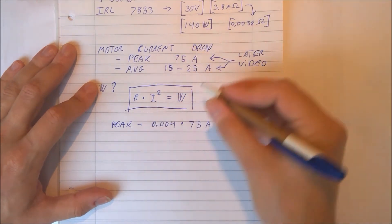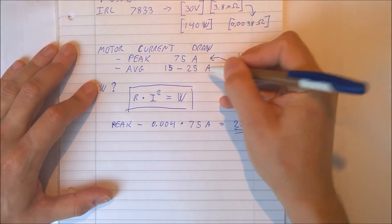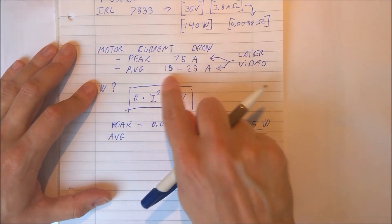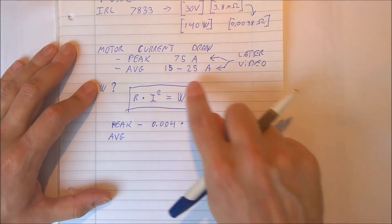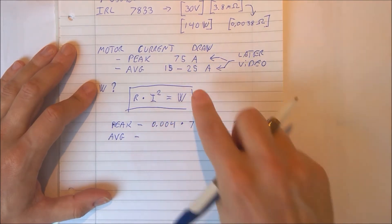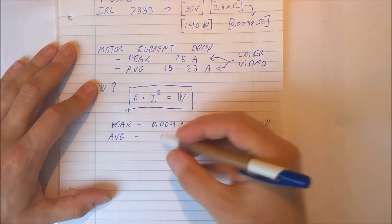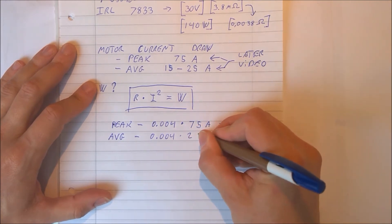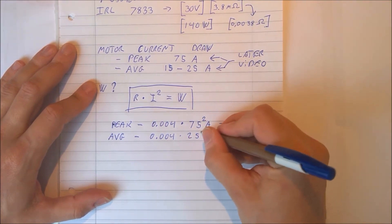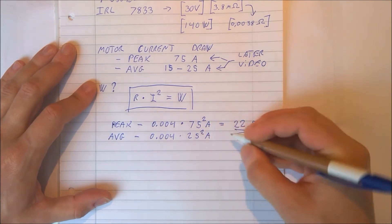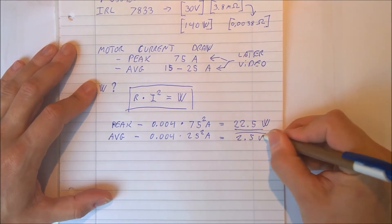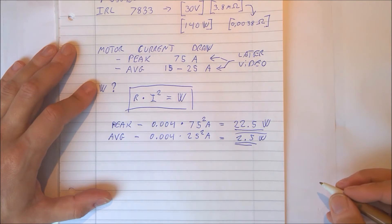The average value is let's say 25 amps to be safe. Because this value will of course depend on what airsoft gun you use. It's the same calculation: 0.004 times 25 squared amps. And that is 2.5 watts of power that we will have to use in the MOSFET.